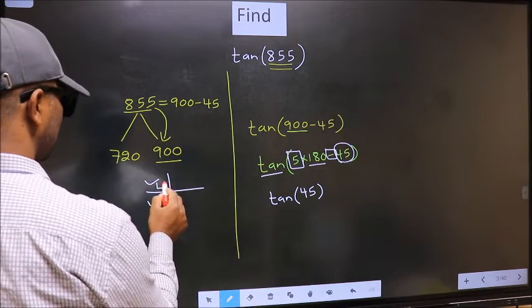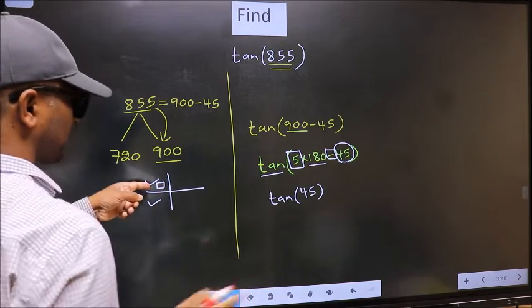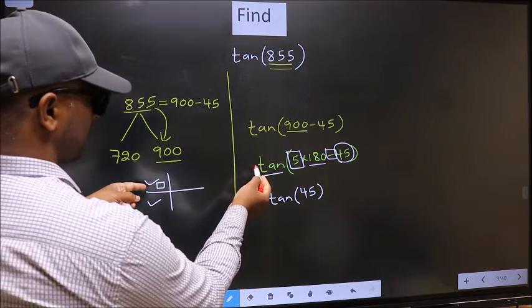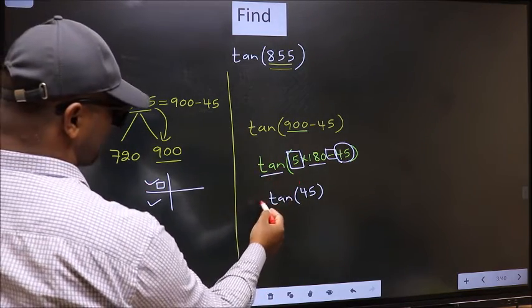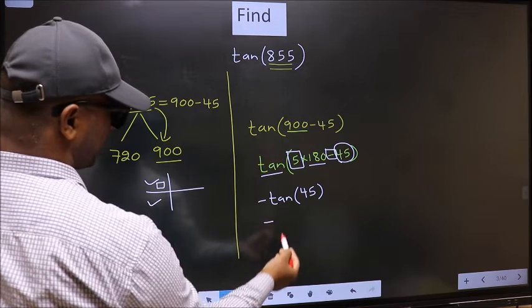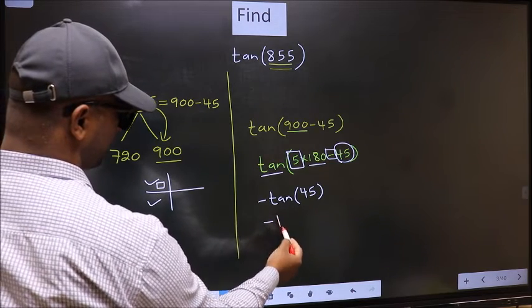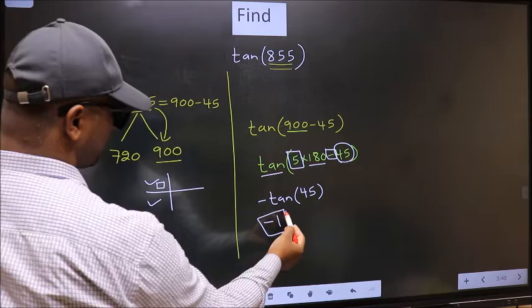And in the second quadrant, tan is negative. So we should put negative. So negative tan 45 is 1. This is our answer.